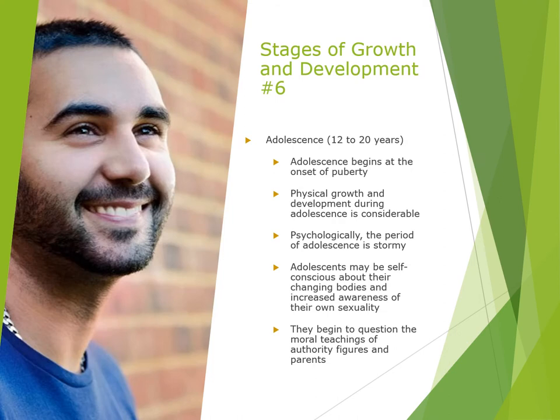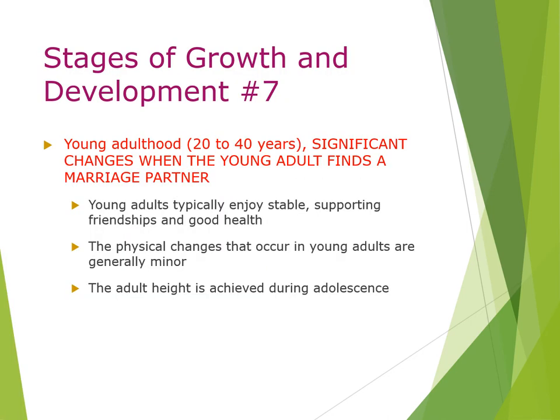Adolescence (12 to 20) begins at the onset of puberty. Physical growth and development are considerable, and psychologically this period can be stormy. Adolescents may be self-conscious about bodily changes, have increased awareness of their own sexuality, and begin to question the moral teachings of authority figures and parents. In young adulthood (20 to 40), significant changes occur when finding a marriage partner. Young adults typically enjoy stable friendships and good health; physical changes are generally minor, as adult height was achieved during adolescence.